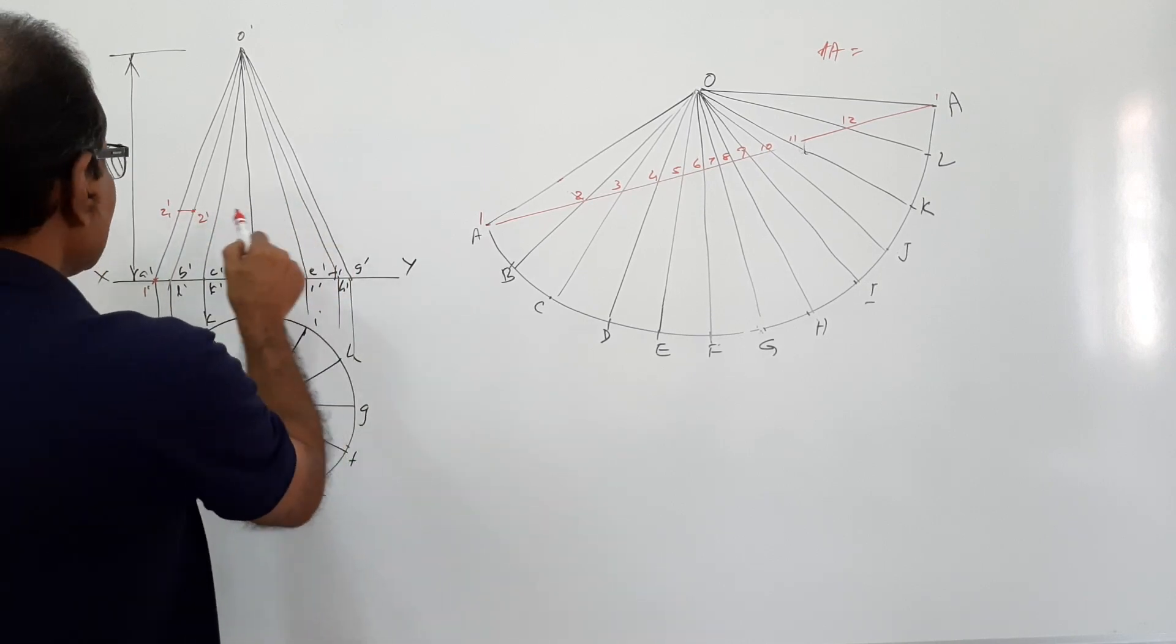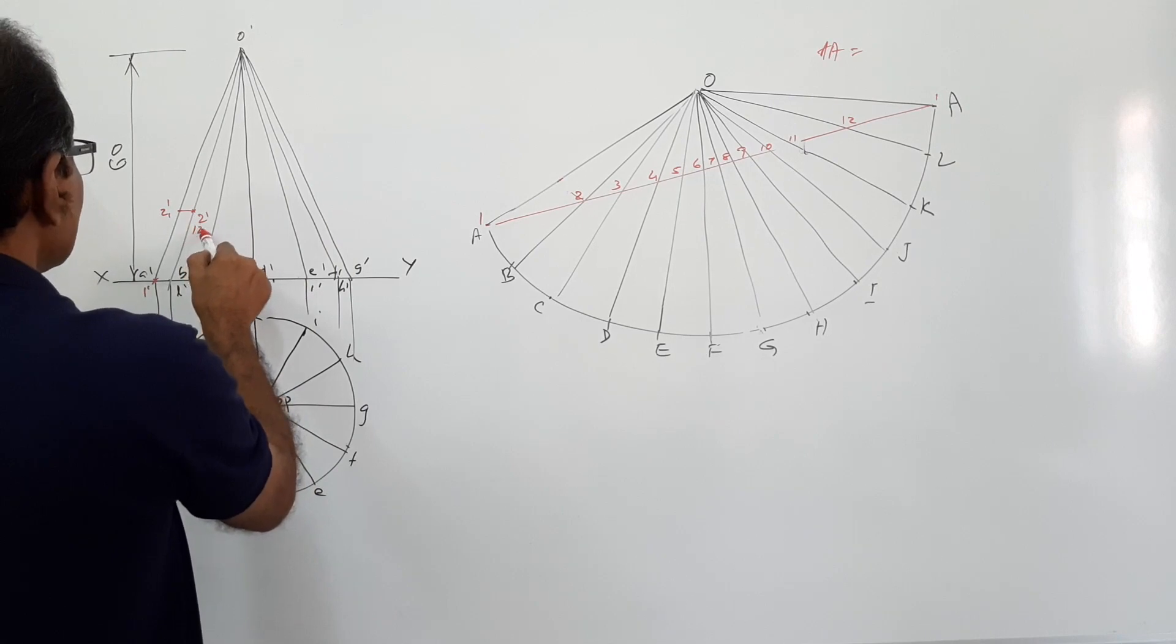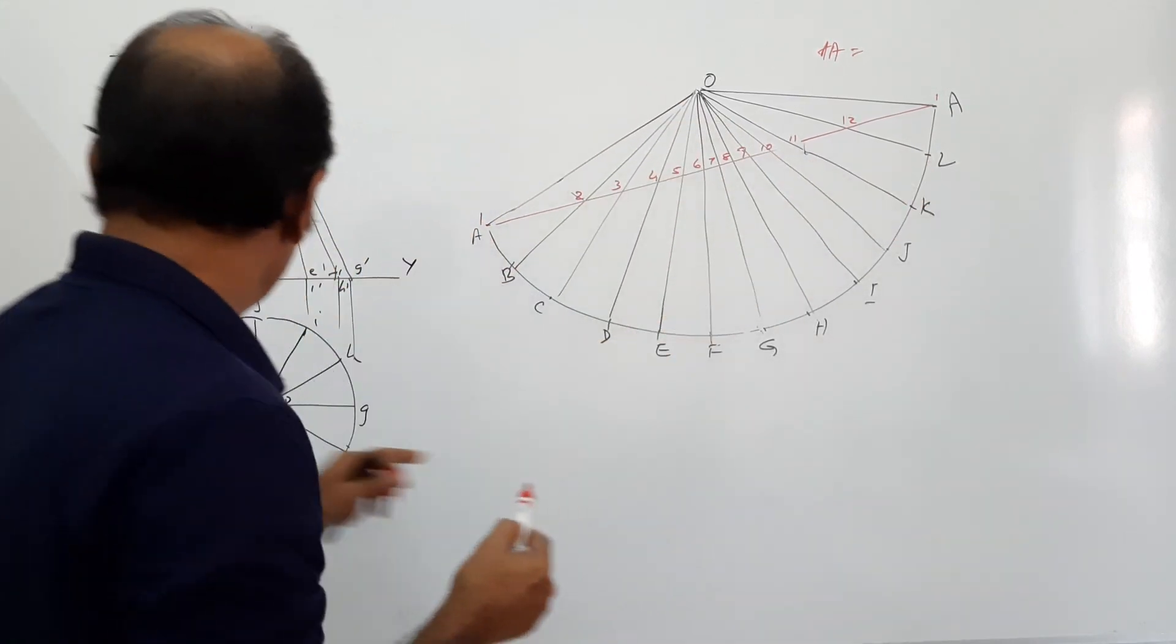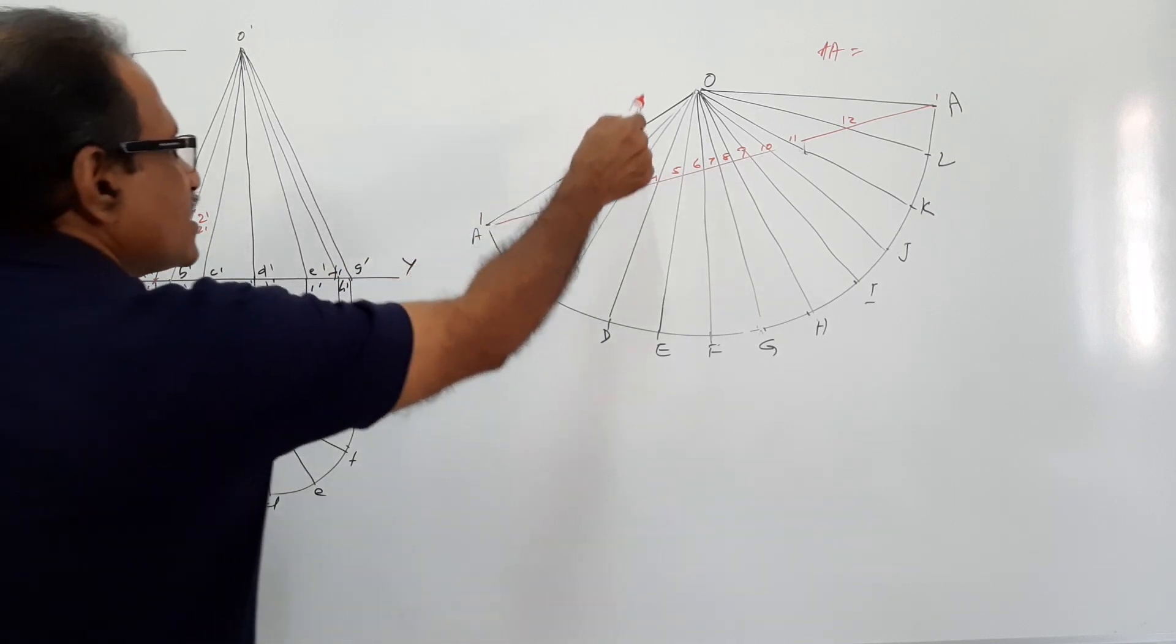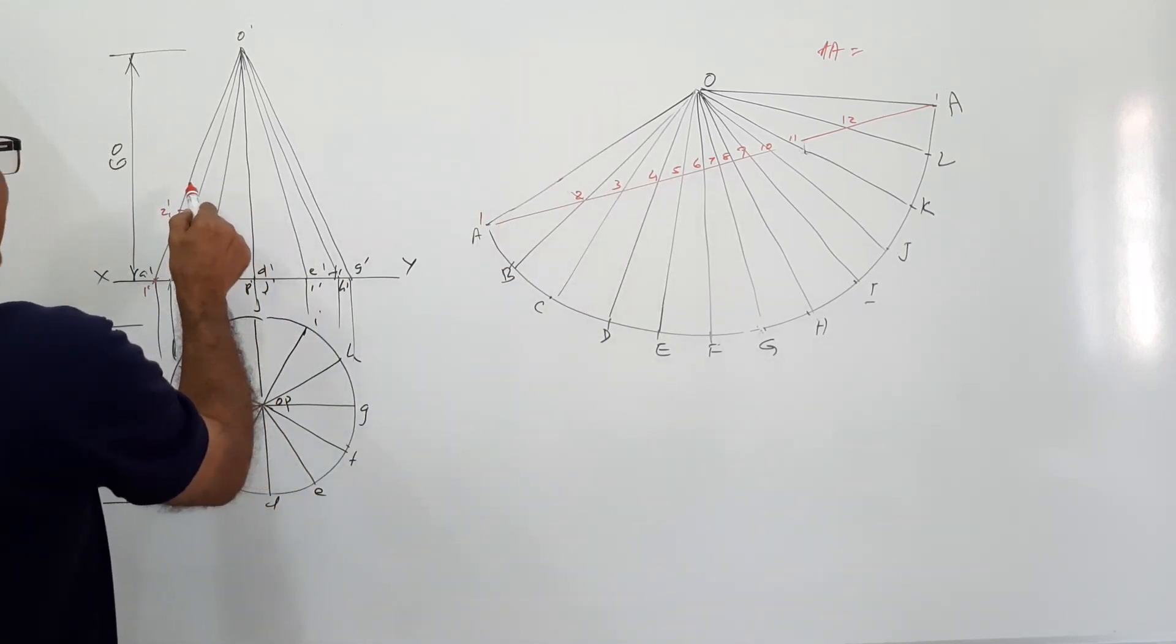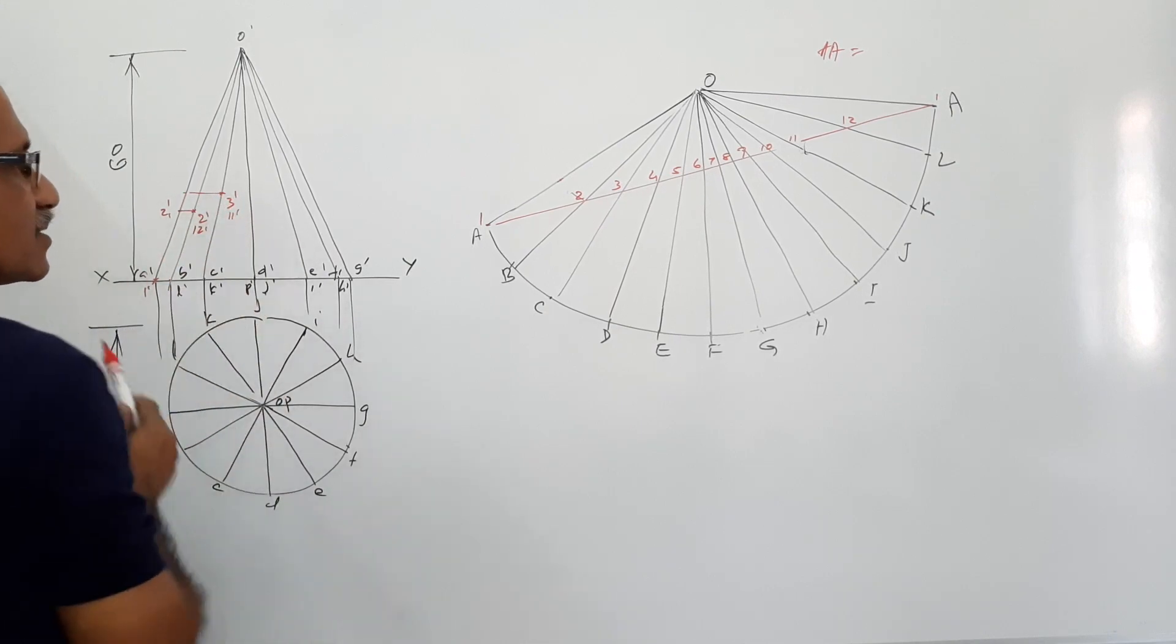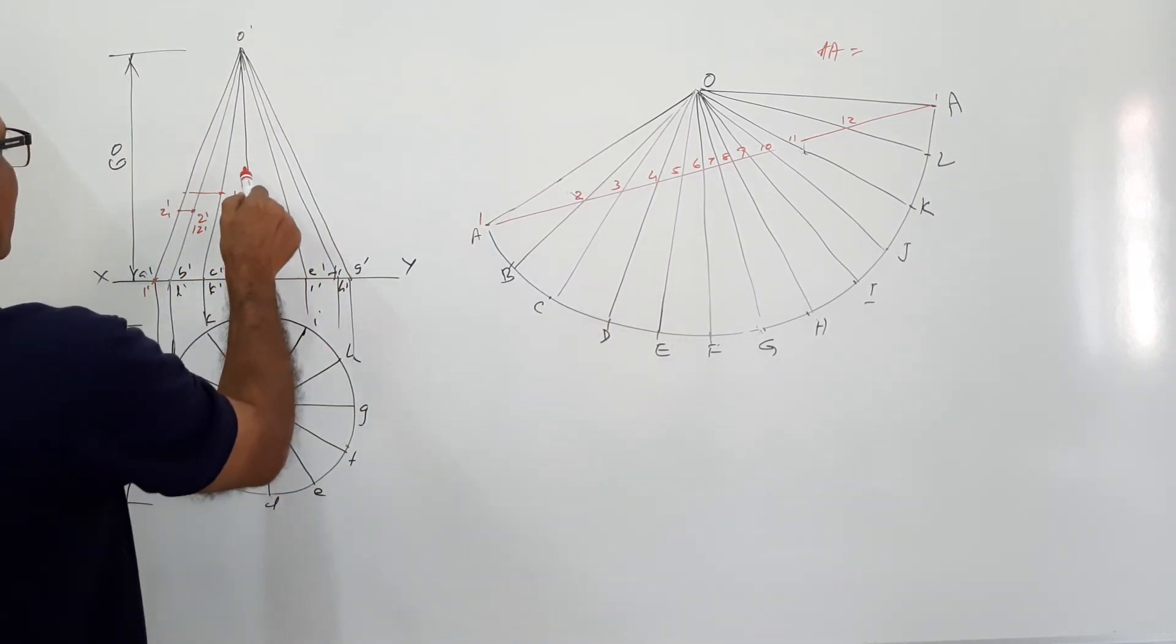Same like this, 12 dash, 3 dash. So this is 2 dash as well as 12 dash. 2 is on OB and 12 is on OL, projected through B passes through N. So this is 3 dash as well as 12 dash. Take the distance O 3, mark here and draw horizontal line to get 3 dash as well as 11 dash. Take O 4 and mark here.